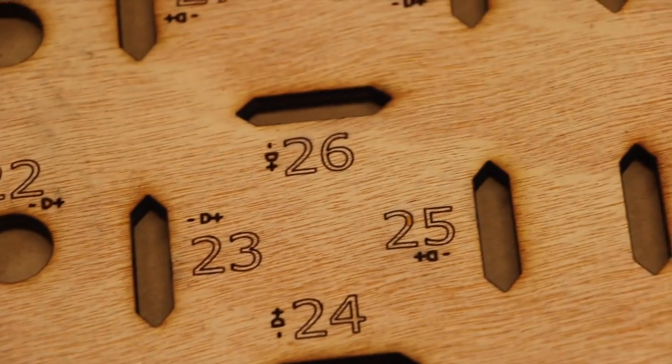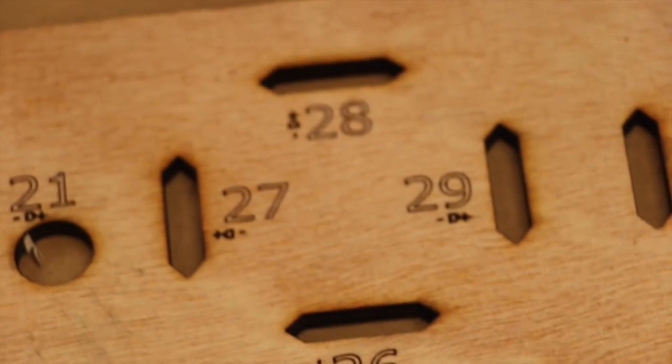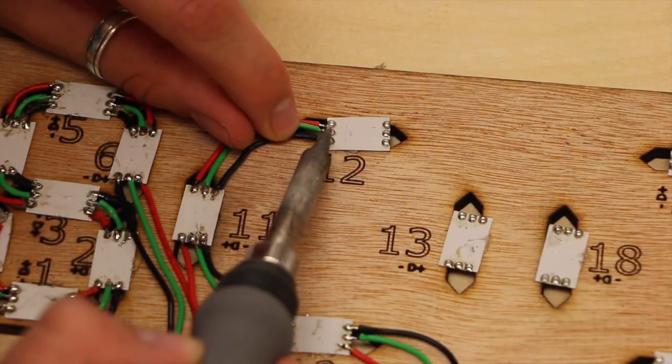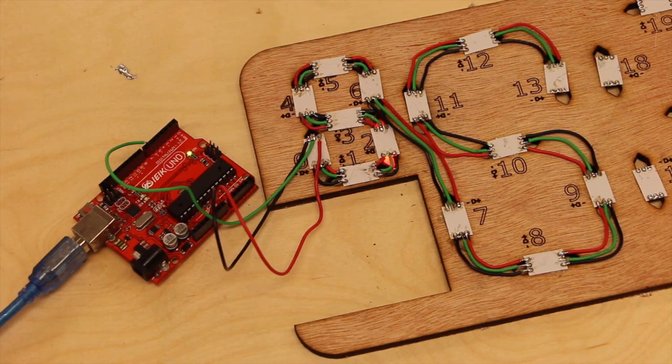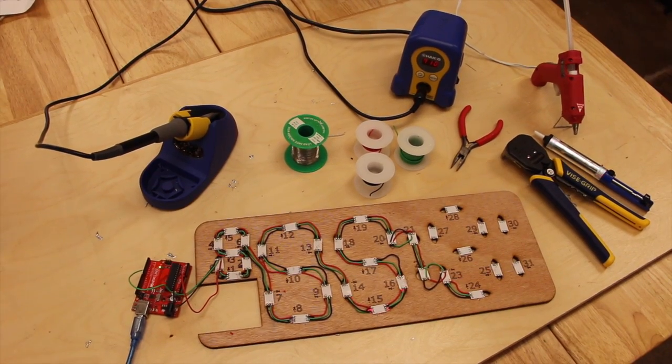The laser etched plus and minus symbols representing 5 volts and ground respectively help to ensure you're always soldering the right pins together. Continue soldering the pixels together following the numbered path.